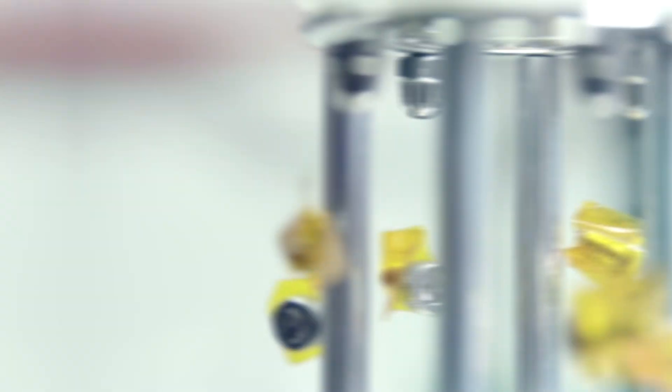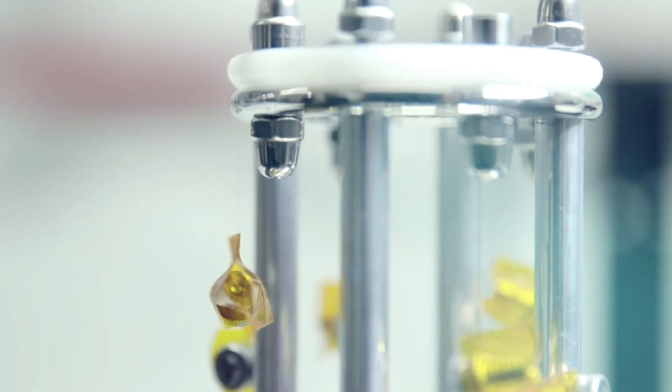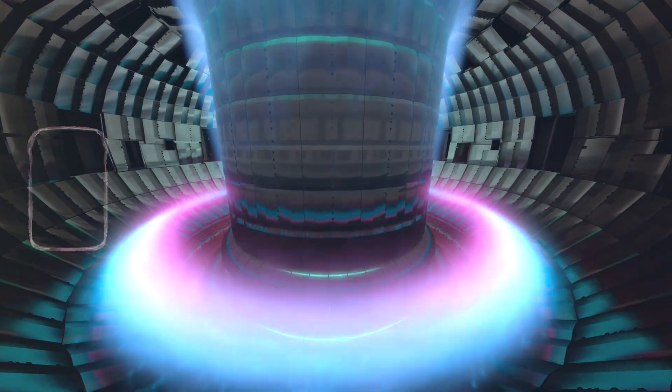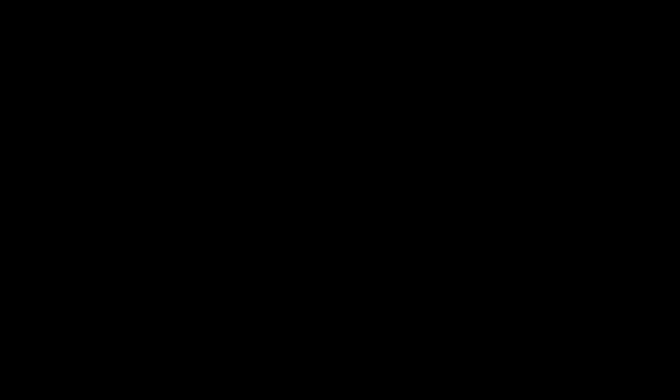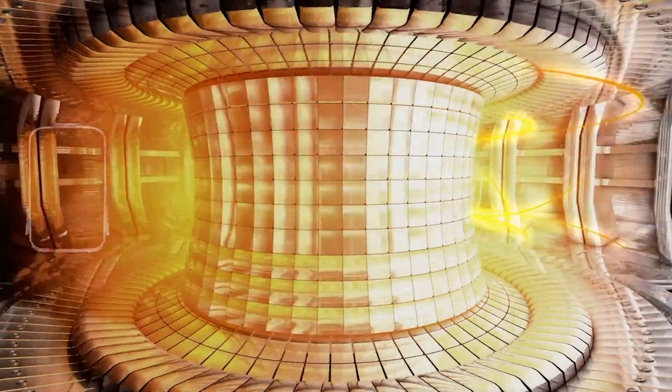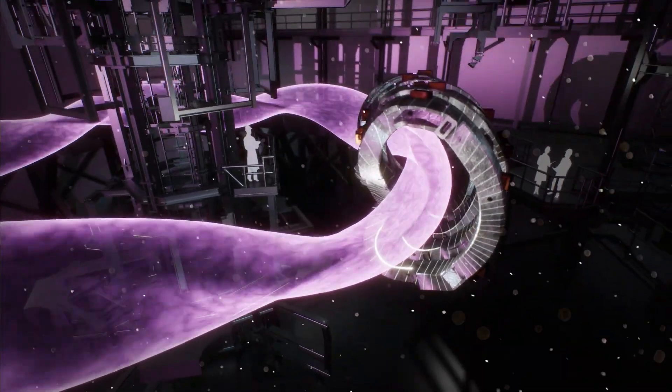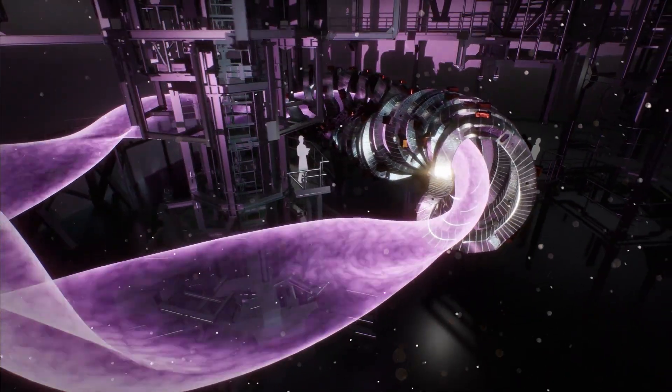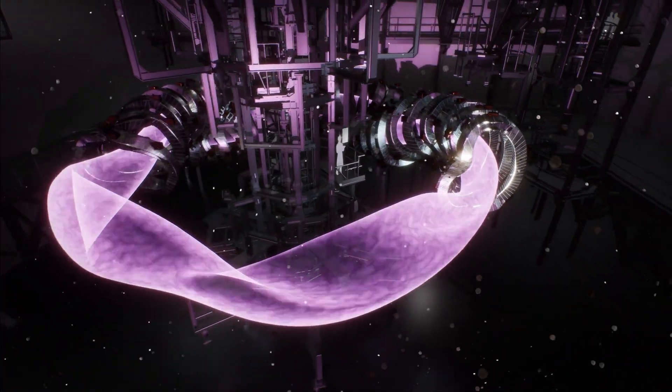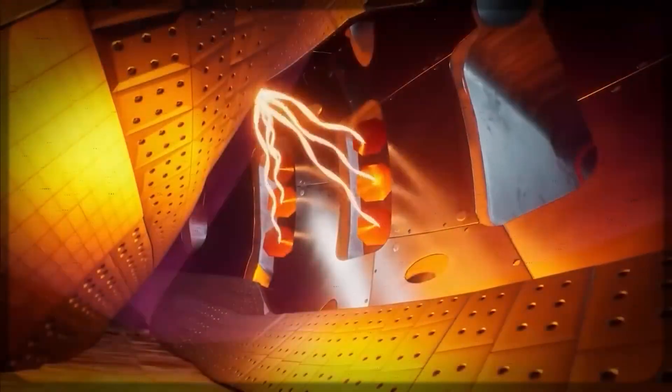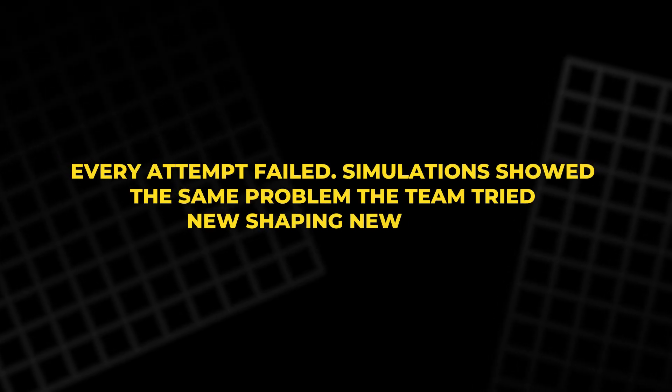To gain energy, ions need to be hot and dense for a long time. Instabilities ruined those conditions. A rotating mode appeared again and again. It acted like a washing machine with clothes stuck on one side. The plasma clumped, rotated, and slammed into the walls. Once that happened, confinement collapsed. No density. No progress. No path forward.